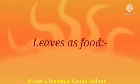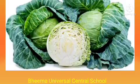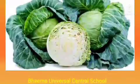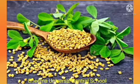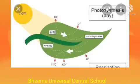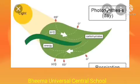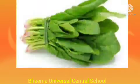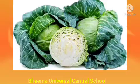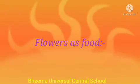Next one is leaves as food. Tell me some names of leaves that we eat as a vegetable. Very good — cabbage, spinach, fenugreek, etc. Leaves are the main site for photosynthesis in plants. They prepare food for the entire plant. Some leaves not only prepare food but also store food in them, like fenugreek, spinach, lettuce and cabbage.